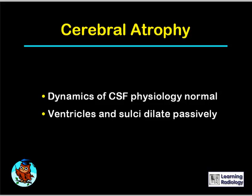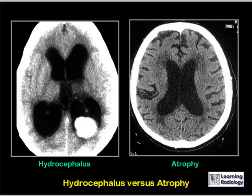Side by side: on the left is hydrocephalus, in which the ventricles are markedly dilated but the sulci are normal in size. On the right is cerebral atrophy, in which both the ventricles and the sulci are dilated.